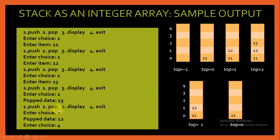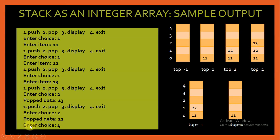When the menu is displayed again, I pop another item using choice 2. The popped data 12 is displayed. The current status of the stack shows top is 0 and the only element is 11. There is only one element in the stack. Now I use choice 4 to exit the program. This is the current status of my stack.